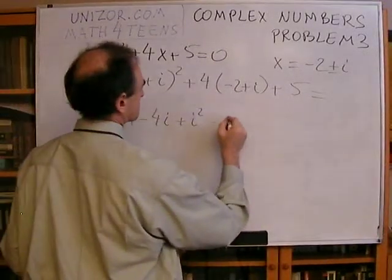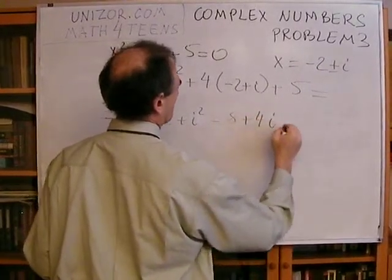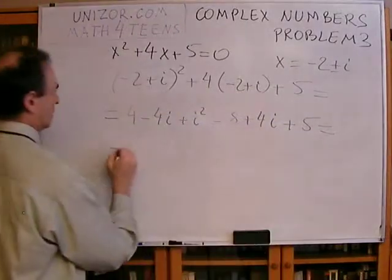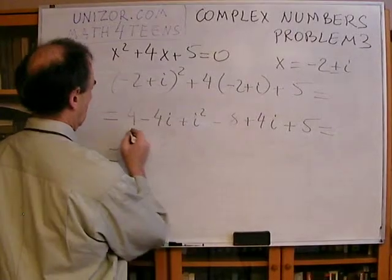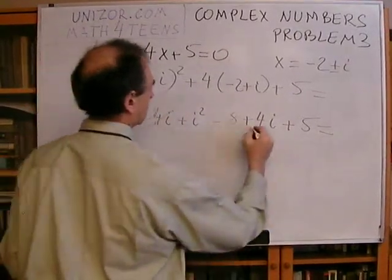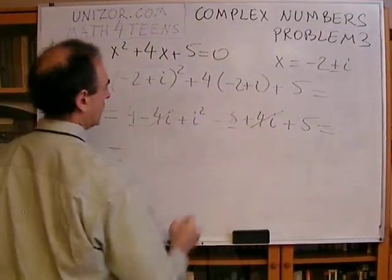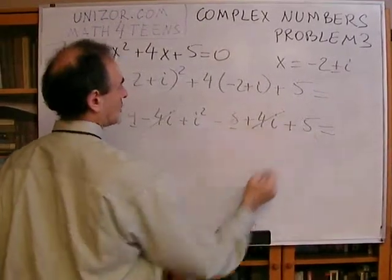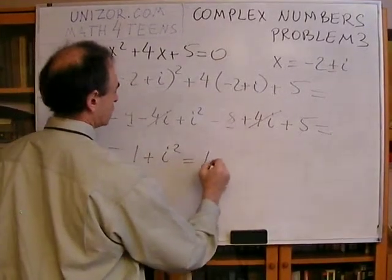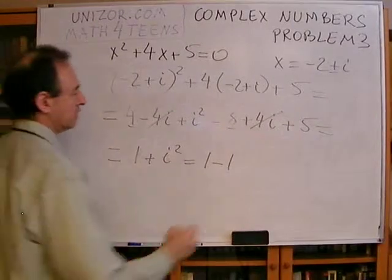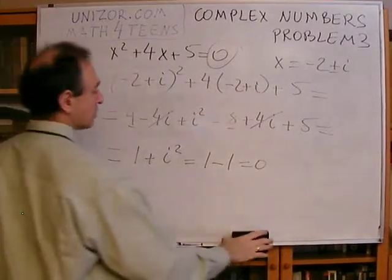So, x squared minus 8 plus 4i plus 5 equals minus 4i plus 4i plus 5, equals. So x squared plus 5 is 1, plus i squared, which is 1 minus 1, because i squared is minus 1, which is equal to 0. Exactly right. So that's the verification of the first root.